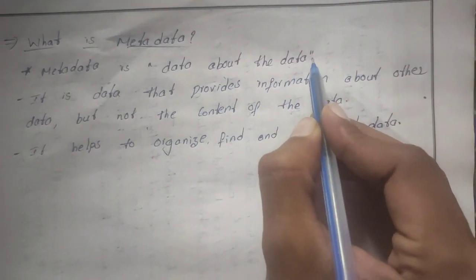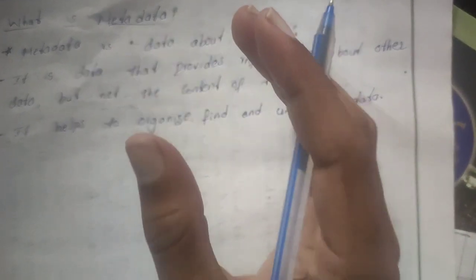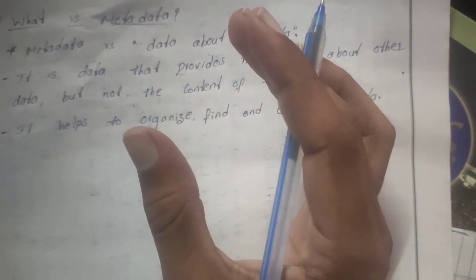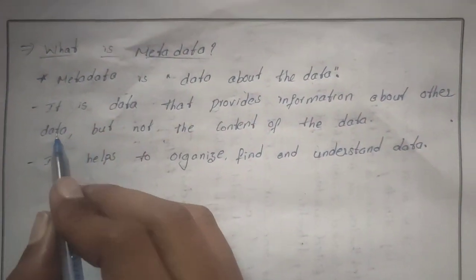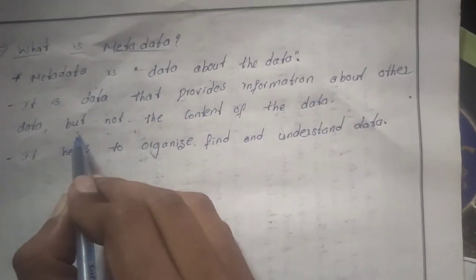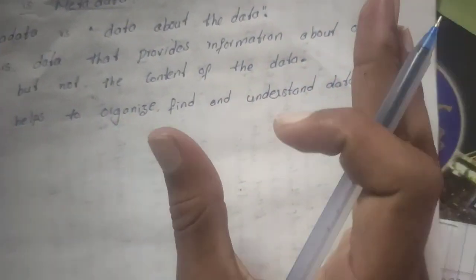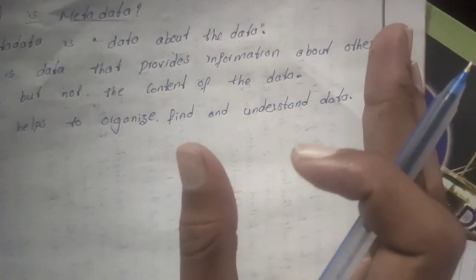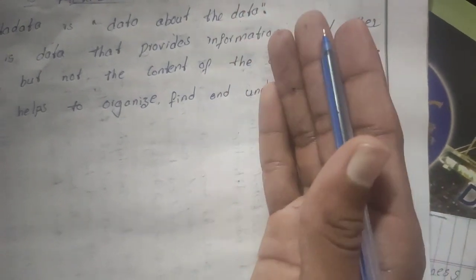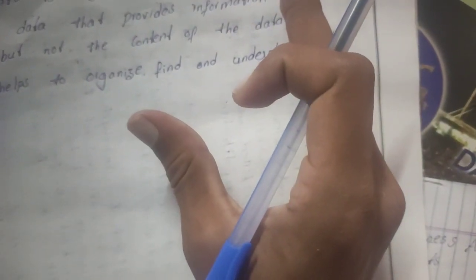Metadata is data about the data. It tells about the data — for example, when was it created, how many times it was updated. It is data that provides information about other data, but not the content of the data. Metadata doesn't produce the content of the data; it produces other information like creation, updation, file size, data type, and description of the data.